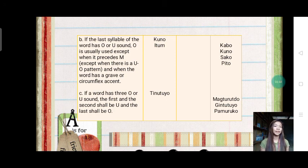Letter c. If a word has three o or u sounds, the first and the second shall be u and the last shall be o. The example here in Hiligaynon is tinutuyo.